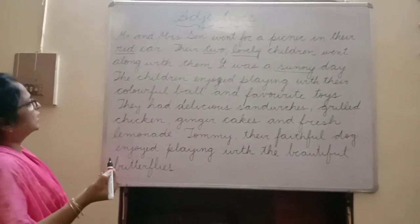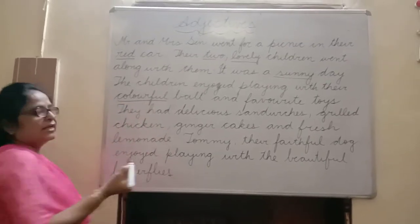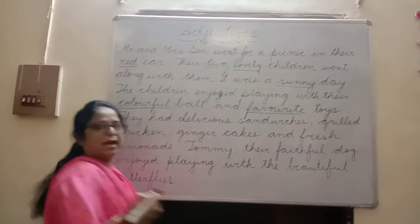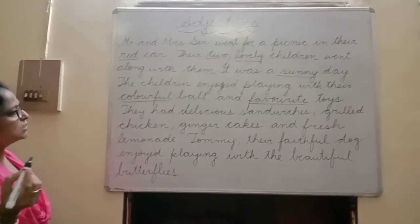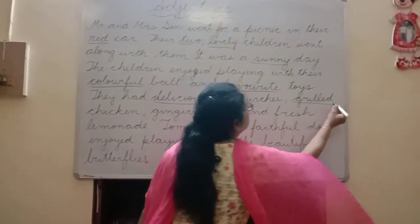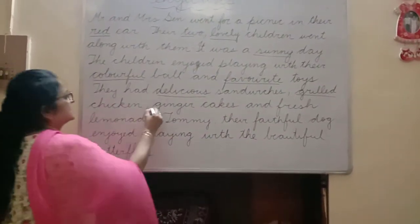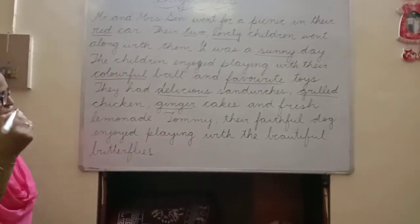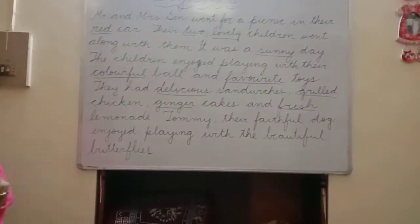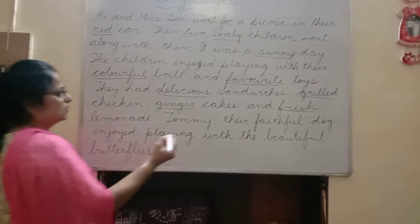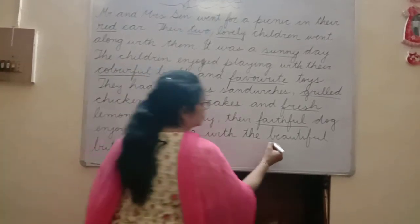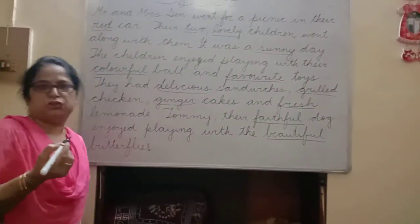The children enjoyed playing with a colourful ball — 'colourful' is again an adjective. And favourite toys — what toys? Favourite toys, so 'favourite' is an adjective. They had delicious sandwiches — 'delicious' is an adjective. Grilled chicken — 'grilled' is an adjective. Ginger cakes — 'ginger' is an adjective. And fresh lemonade — 'fresh' is an adjective. Tommy, faithful dog — 'faithful' is an adjective. Enjoyed playing with the beautiful butterflies — 'beautiful' is an adjective.